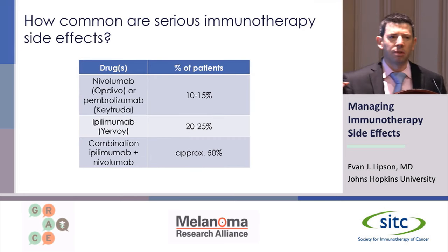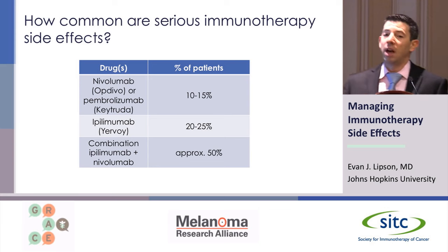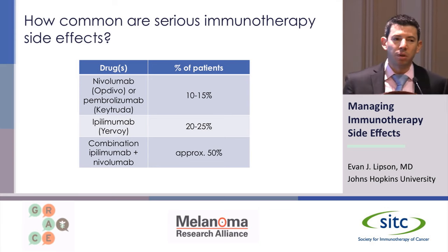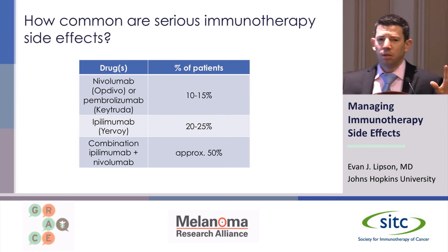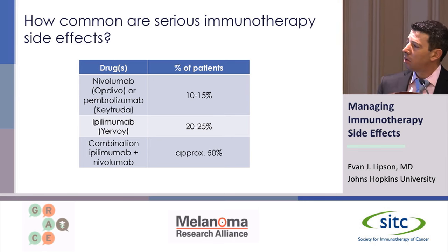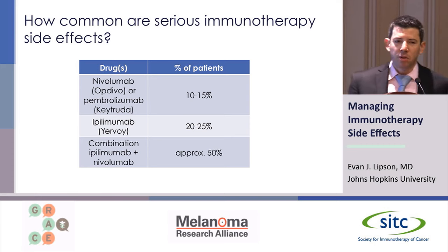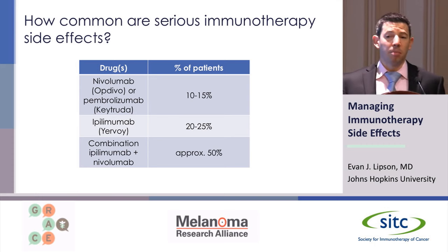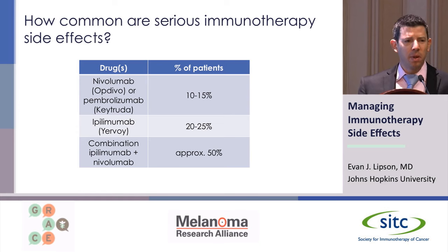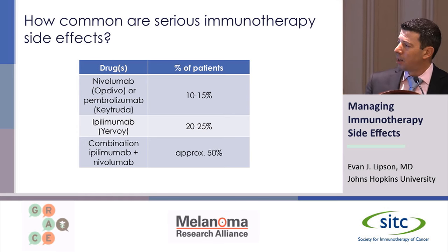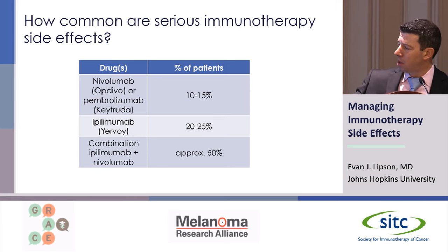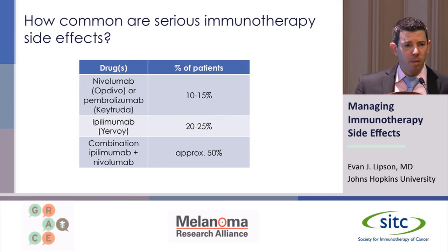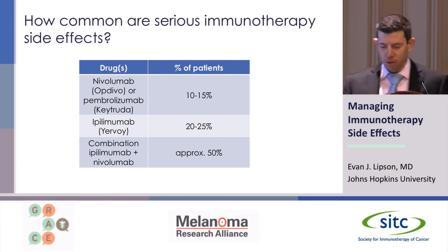So how common are the serious side effects — where we really have to get in there and intervene fairly promptly? These are round numbers. In general, with the PD-1 agents, we see about 10% or 15% of patients where we have to do something. It's upped a little bit with the CTLA-4s — with ipilimumab, for example, you'll see about 20% or 25%. And then that number jumps significantly when you use them in combination: about half of patients getting the combination ipi plus nivo require some intervention.